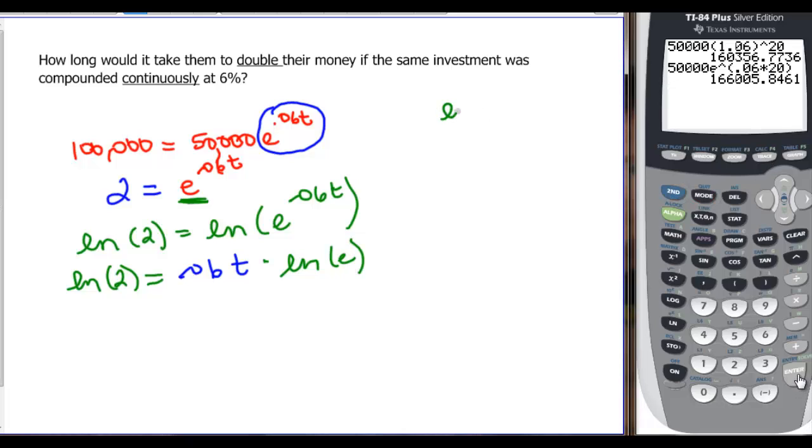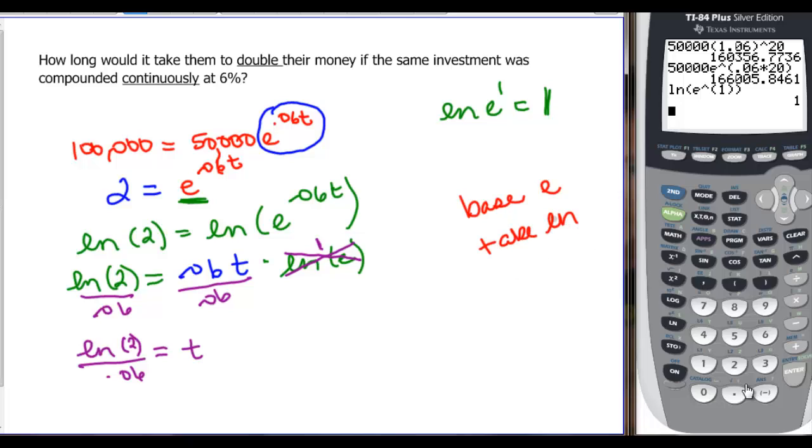Come over to your calculator for a second. ln e to the first is equal to, because that's what we have, ln and then second ln and the exponent is 1. You have to close up parenthesis twice because it's once for the exponent and one for the argument. We find that that's just equal to 1. So we really can just say that this is 0.06T times 1. That's why taking the natural log is so nice. Because at this point then we could just divide by 0.06 and divide by 0.06. And T will be equal to ln 2 divided by 0.06. Remember, base e take the natural log of both sides and then ln e will always be equal to 1.